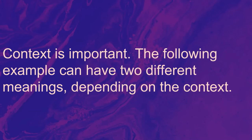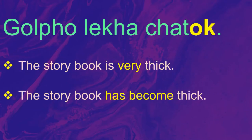Context is important. The following example can have two different meanings depending on the context. This can either mean the storybook is very thick, where Ok indicates intensification — very thick. Another interpretation is the storybook has become thick. Here Ok would indicate a change of state: first the storybook was not thick, now it is thick. Something has changed and the storybook has become thick.